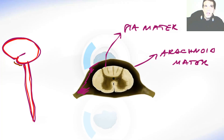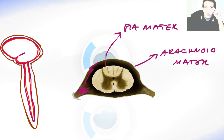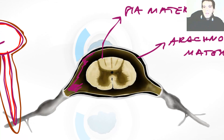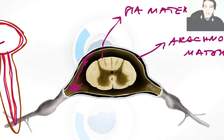Here we have the arachnoid mater, and now comes the dura mater. If you don't know what dura mater is or what it's made of, you should go back and watch the videos about the brain membranes. In those videos I explained that dura mater consists of two layers — one inner and one outer layer. Around the brain those layers can sometimes be separated and sometimes attached to each other, for example when they separate they create the cerebral falx.